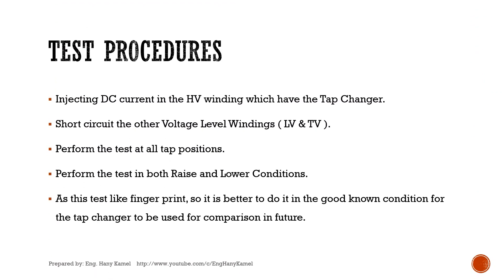To perform dynamic resistance measurement, inject DC current in the high voltage winding which has the tap changer, and short-circuit the other voltage level windings — low voltage and tertiary if available. Perform the test at all tap positions and in both raise and lower conditions. As this test is like a fingerprint, it is better to do it in a known good condition for the tap changer, to be used for comparison in the future.